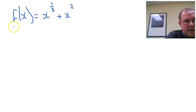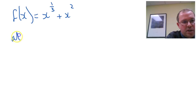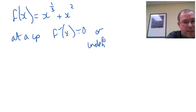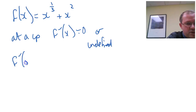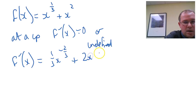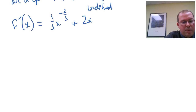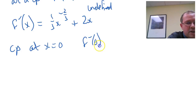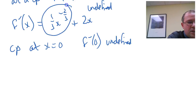Firstly, let's find the critical points. Remember, at a critical point, either the first derivative is zero or it's undefined. So let's find the first derivative. Using our derivative rule, the third comes down, knock the power off, and x squared goes to 2x. We can see straight away when we look at that first derivative, we've got a critical point at x equals zero, because at x equals zero the first derivative is clearly undefined because of this x to the power minus two thirds.